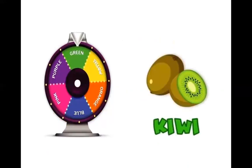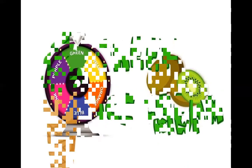Next is a green color fruit — this is kiwi. Kiwi is green, so what color ice cream are we going to get from kiwi? We are going to get a green ice cream!